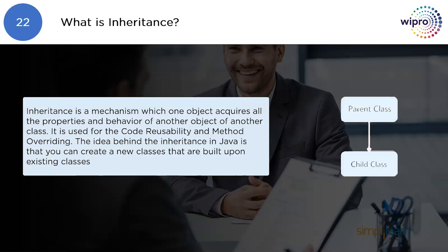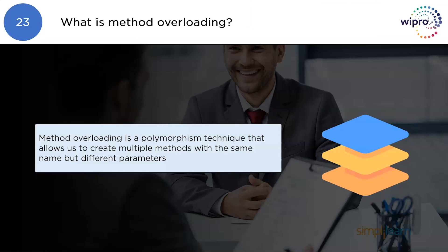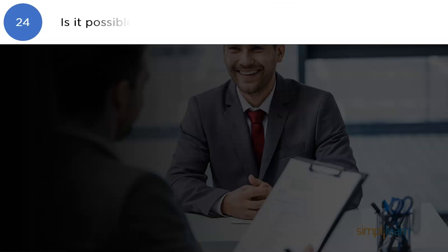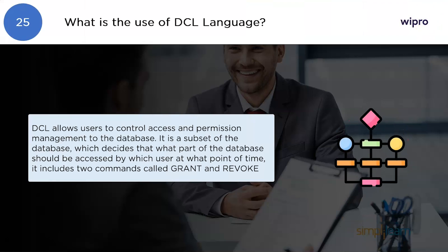What is method overloading? Method overloading is a polymorphism technique that allows us to create multiple methods with the same name but different parameters. Is it possible to override a private method? No, it is not possible to override a private method because the scope of a private method is limited to the class and we cannot access it outside the class.